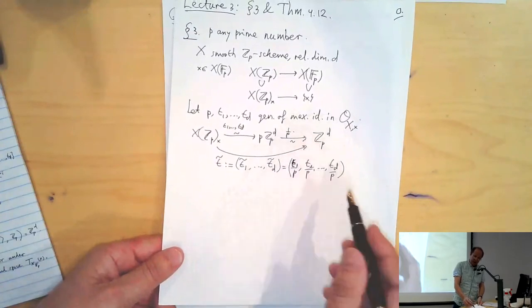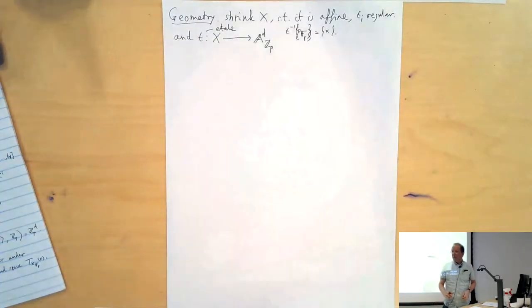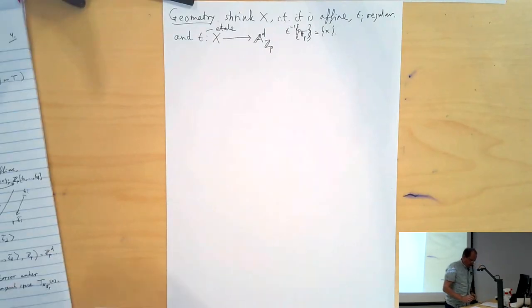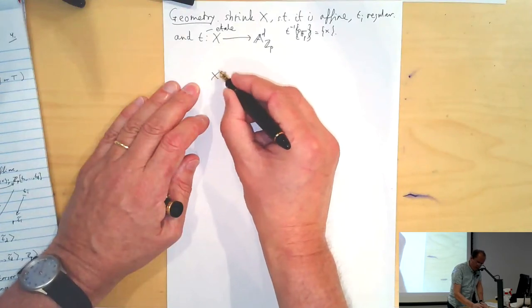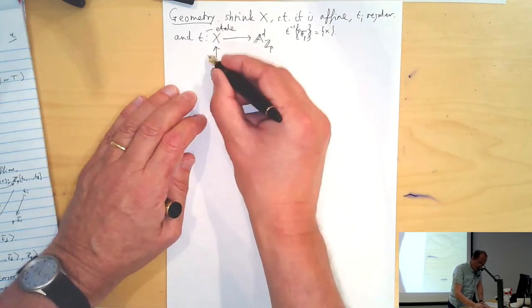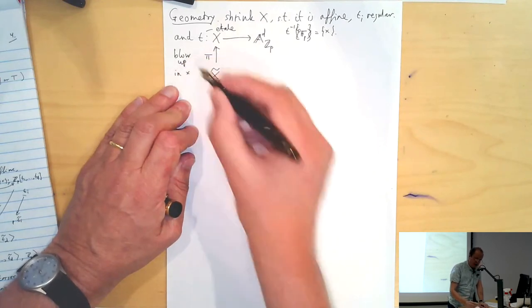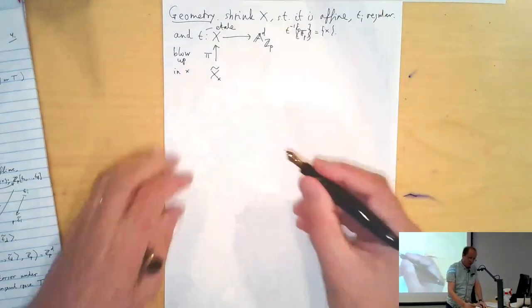If you blow up in the closed point little x, these divided parameters show up. We define the blow-up X̃_x with map π, which is the blow-up in little x. Blow-ups are easier with coordinates, which is why we included the map to affine space. We also blow up the affine d-space at the origin mod p.